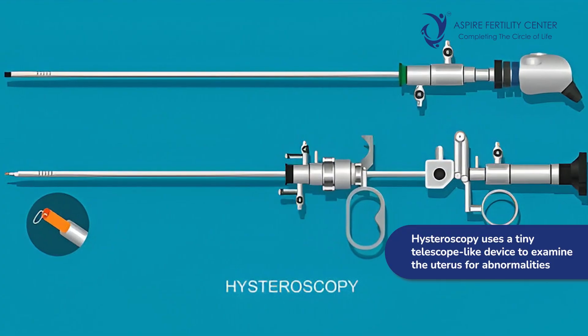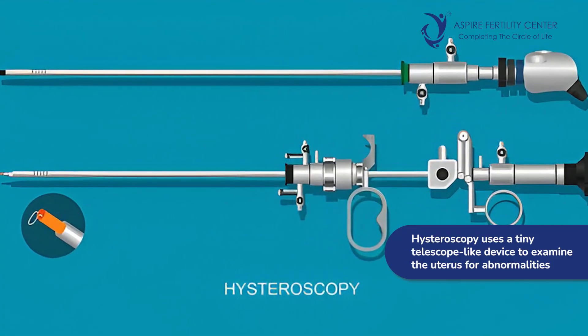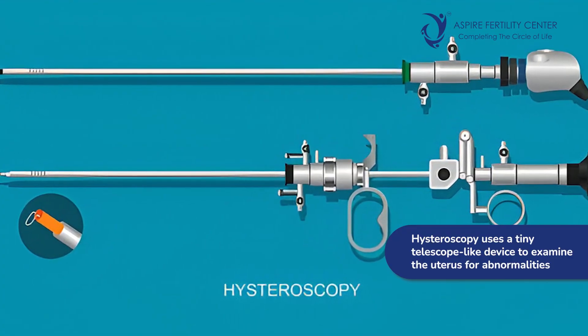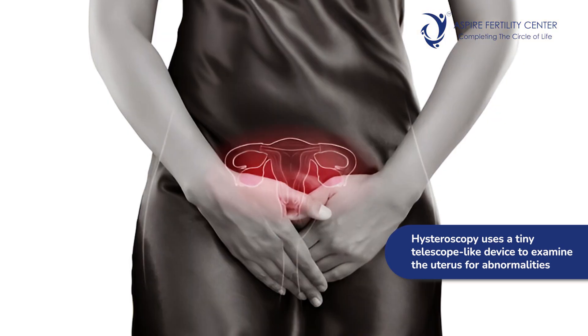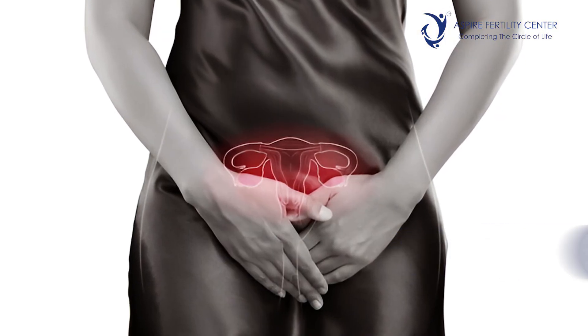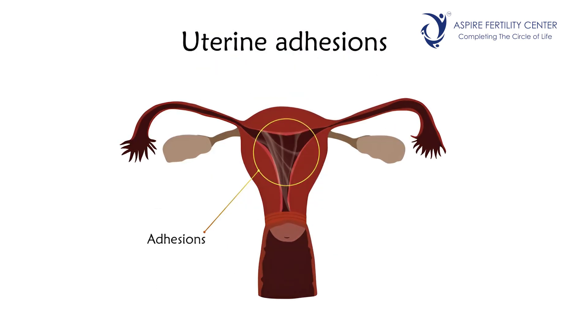Hysteroscopy is a procedure wherein we use a tiny telescope-kind of device which is passed into the uterine cavity to check if there are any irregularities, structural problems, polyps, adhesions, or even anomalies of the uterus — such as if a lady is born with an abnormality in the uterus. These are all conditions that can be diagnosed with a hysteroscopy.